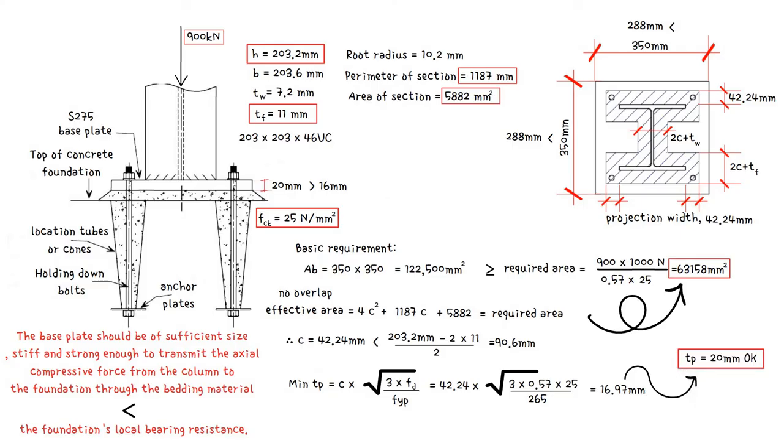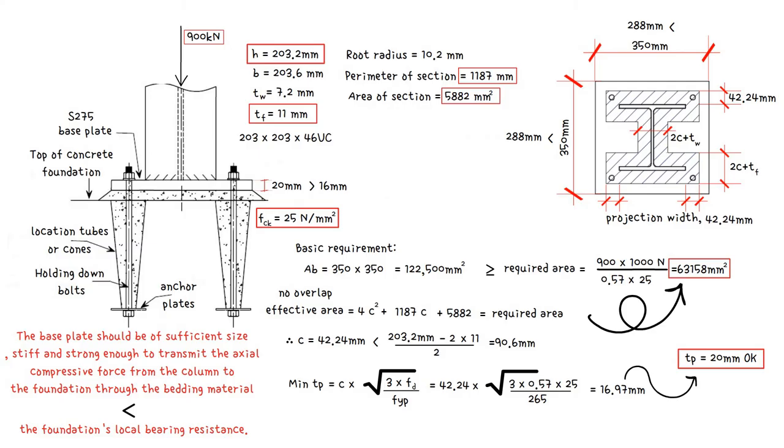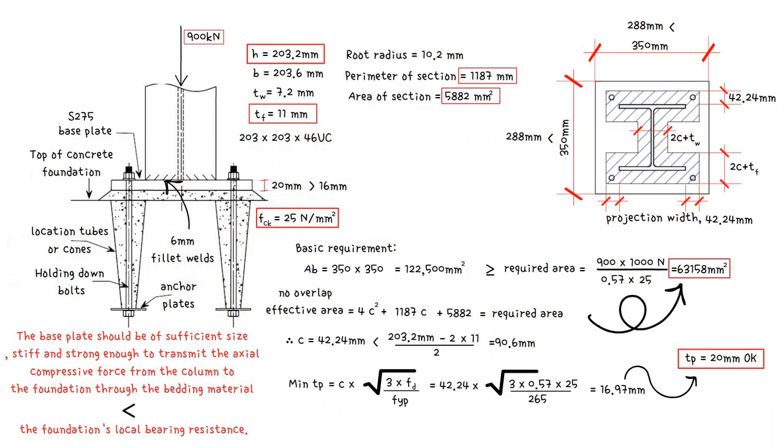The axial force is assumed to be transferred through direct bearing, which is achieved through normal fabrication processes. To connect the baseplate to the column, only nominal welds are required. In practice, however, full-profile 6 millimeters fillet welds are often used.